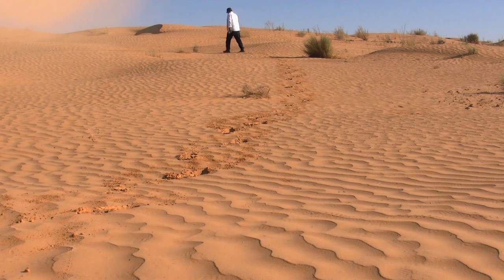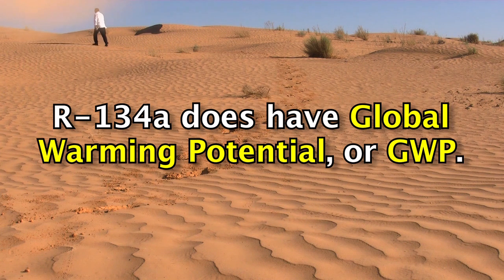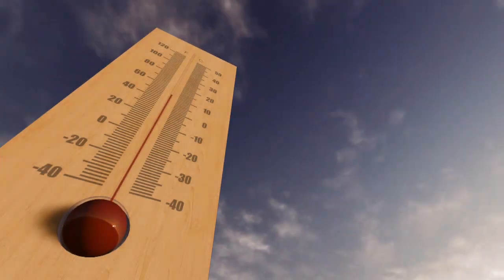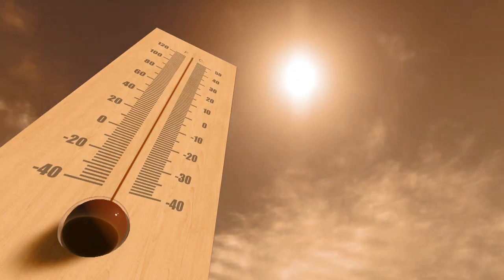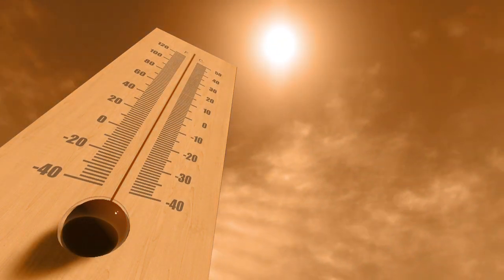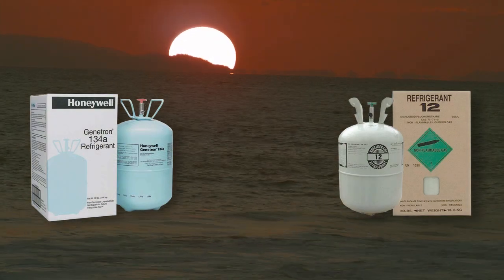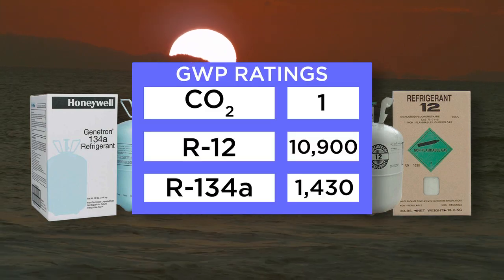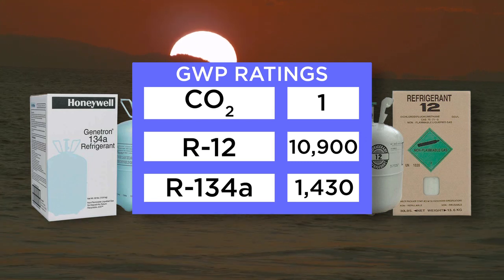However, like R-12, R-134A has what is known as Global Warming Potential, or GWP. GWP is a measurement of a substance's ability to produce a global warming effect. Global warming has come to the forefront in recent years and relates to the warming of the Earth's atmosphere due to the increase in greenhouse gases, which contribute to trapping heat. Although R-134A is not nearly as harmful as R-12, neither as it relates to ozone depletion or global warming, it still has a GWP rating of 1,430, versus carbon dioxide, which has a GWP rating of 1.